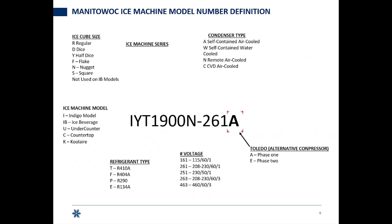After that, we did have some alternative compressors that went into machines after we had to find a different compressor manufacturer. If you have an alternative compressor, there will be a letter — either A for phase one or E as in Echo for phase two — right after the electrical code, letting you know that it has a different compressor from when it was originally made, the first series of the 1900s in the case of this ice machine.